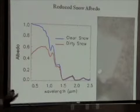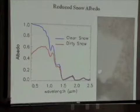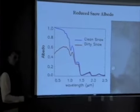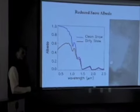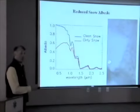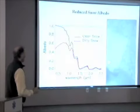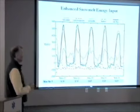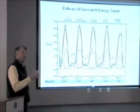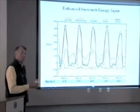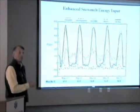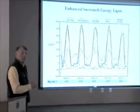Quintupling the amount of solar energy available for snow melt is no small thing. We'll show you some evidence of how dramatic that effect can be. This is another way to look at the contribution of reduced albedo from dust on total energy budget at the snowpack surface.